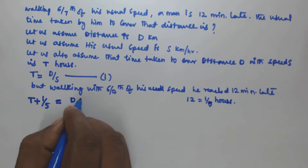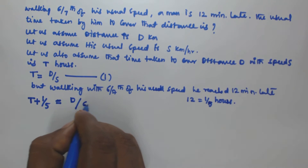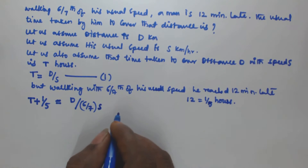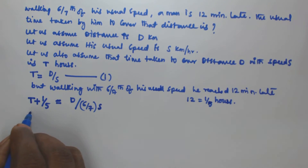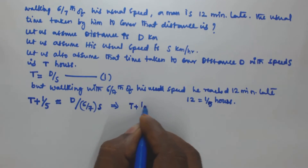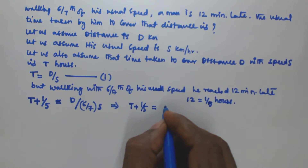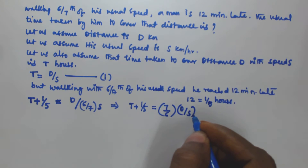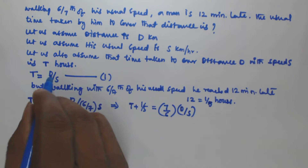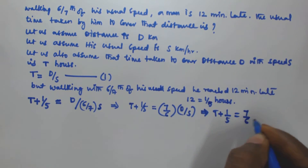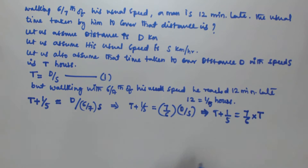The distance is the same d, and the new speed is 6/7 of s. So the new time is d divided by (6/7 × s), which equals 7/6 × (d/s). From Equation 1, d/s = t, so we can write: t + 1/5 = 7/6 × t.